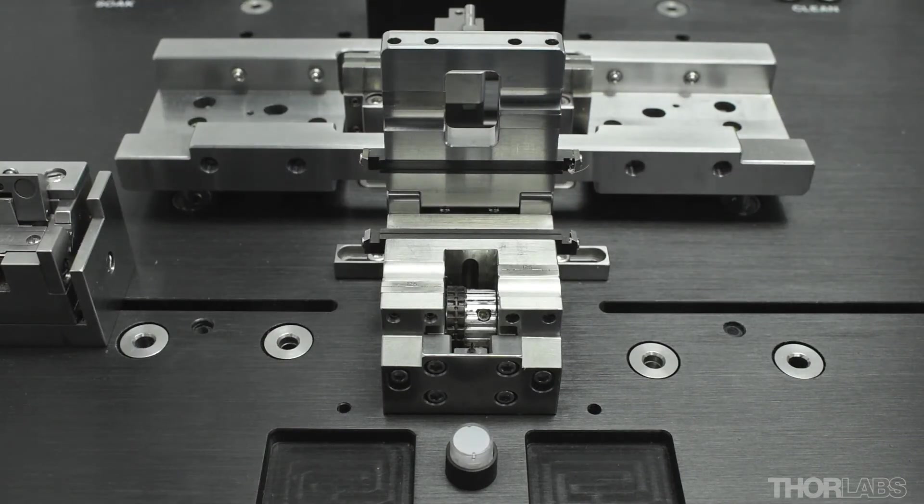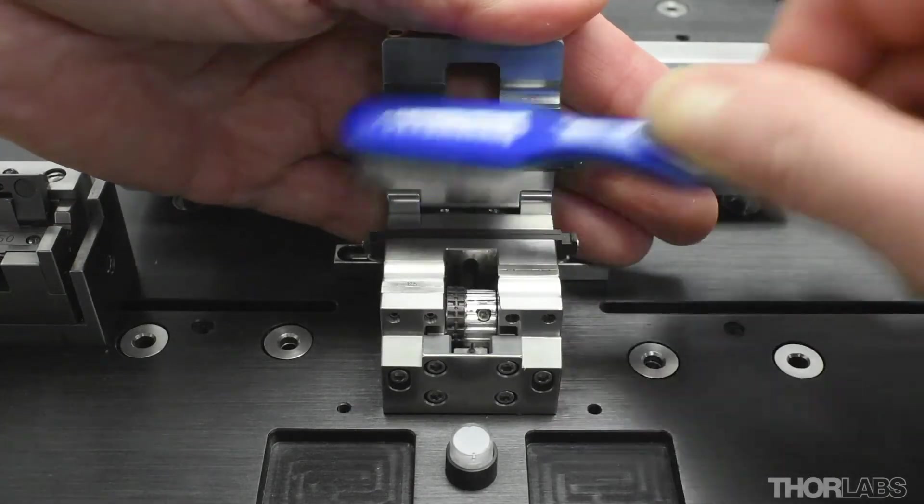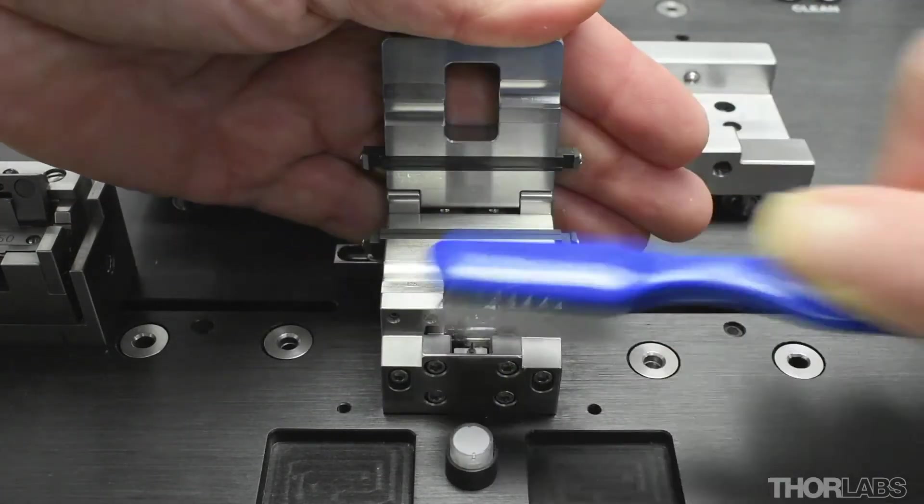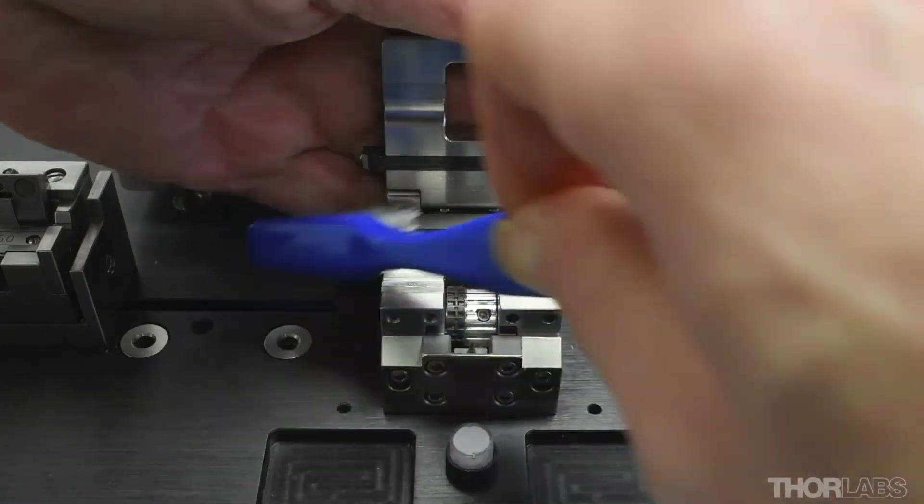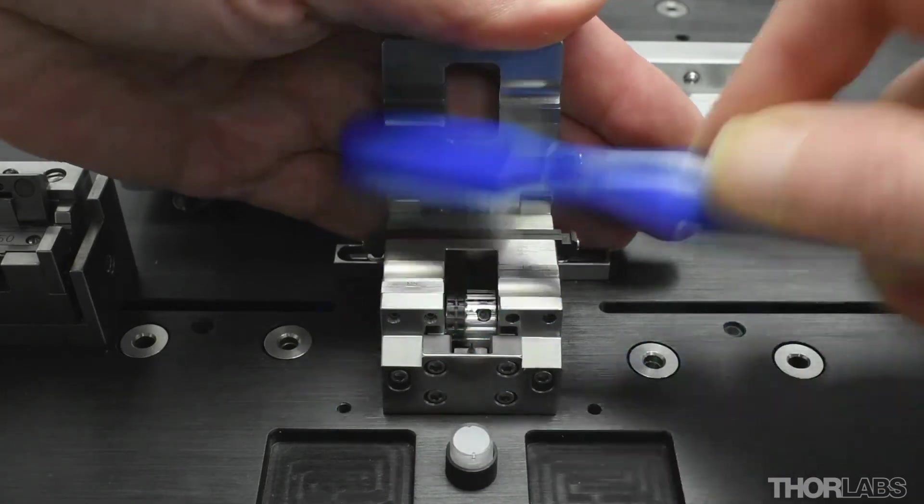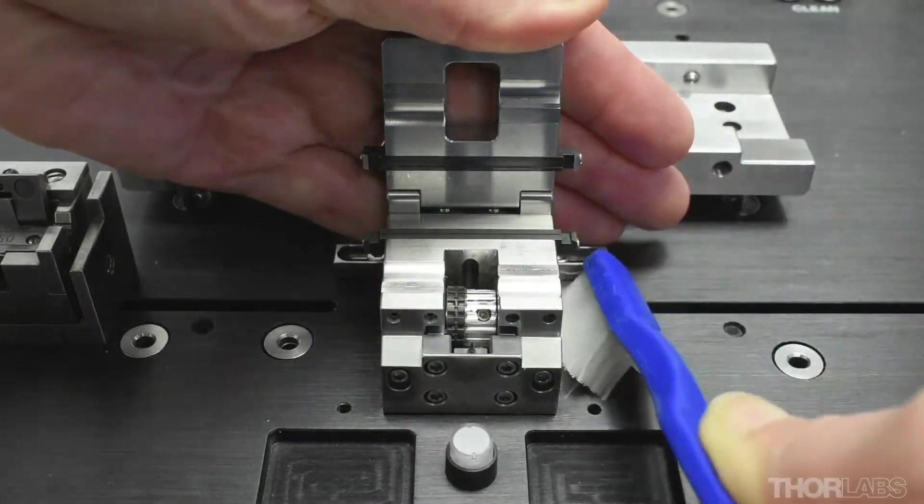Then, using a hand behind the lid to prevent debris being flicked back towards the splice station, use the soft blue toothbrush provided with the unit to clean off the smaller particles of debris. Make sure that you thoroughly clean the area around both the lower and upper inserts and also down the sides of the block too at the strip blades.